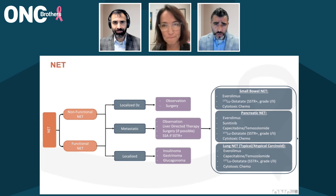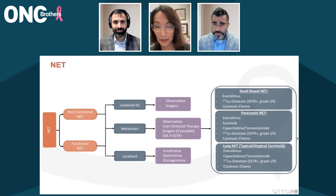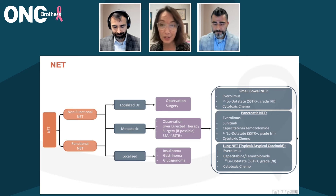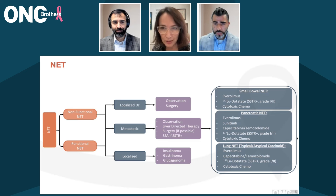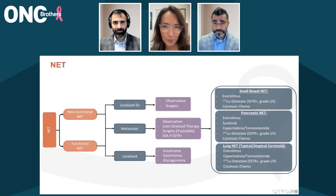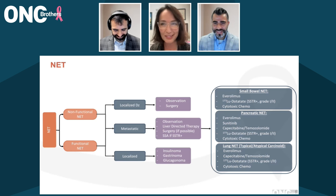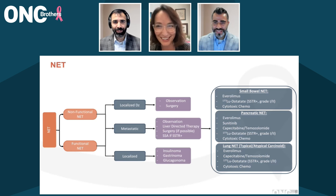Is there any scenario where you would utilize somatostatin analogs for non-functional NETs at all? Absolutely — I often will use somatostatin analogs as a first-line tumor control agent for patients with well-differentiated NETs, especially grade 1 and 2, and especially if they have fairly low-volume disease. It is so well-tolerated. I tell patients in clinic: I don't want the fix to be worse than the problem — if you're asymptomatic, I don't want to make you feel sick.